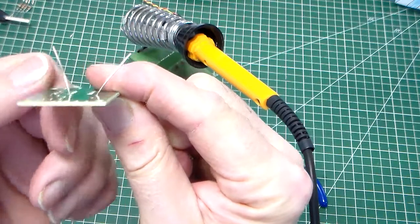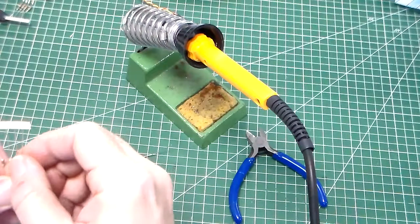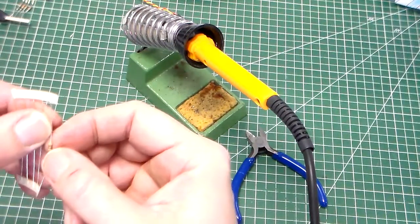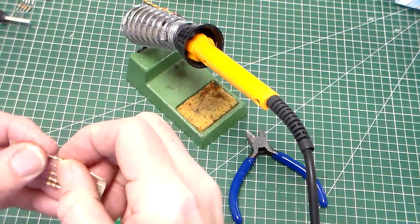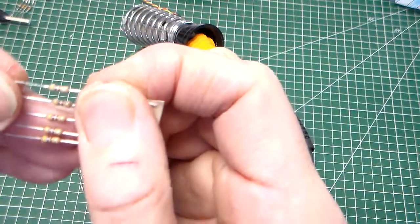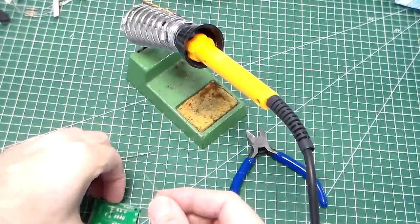The next resistor we're going to fit is the 470 ohm resistor, and the color code for that is yellow, purple, brown. You can see the color code there - yellow, purple, brown. That's great.